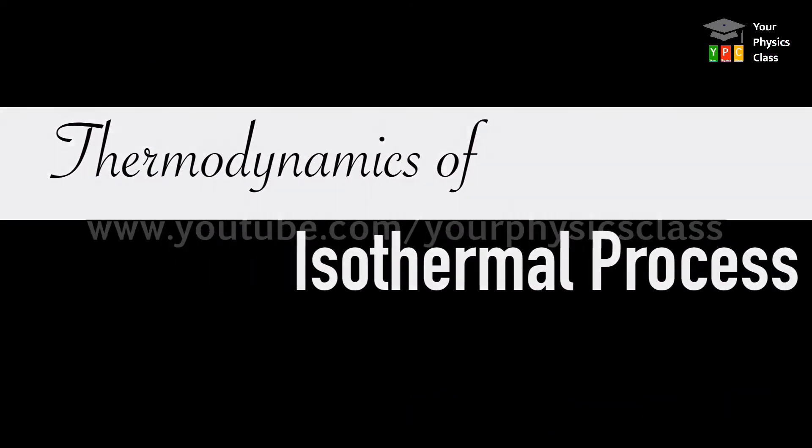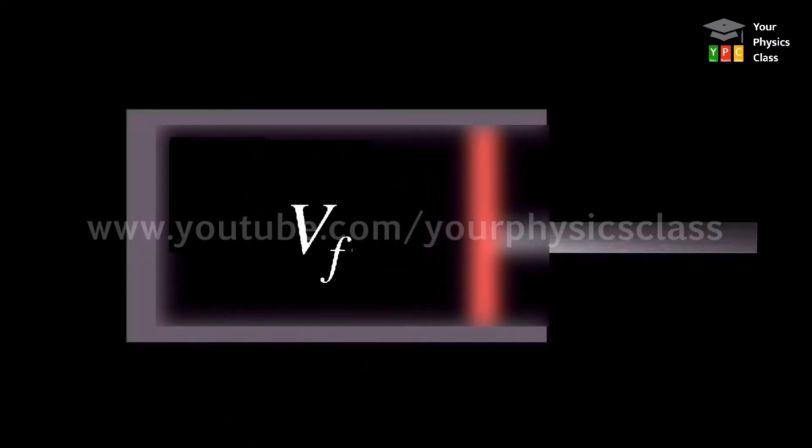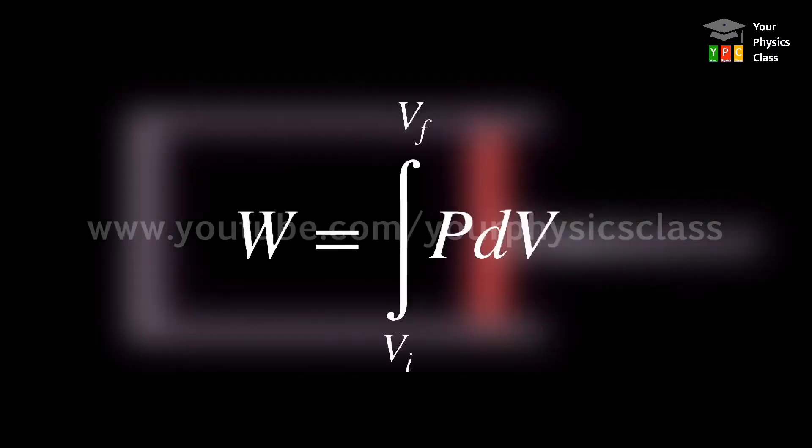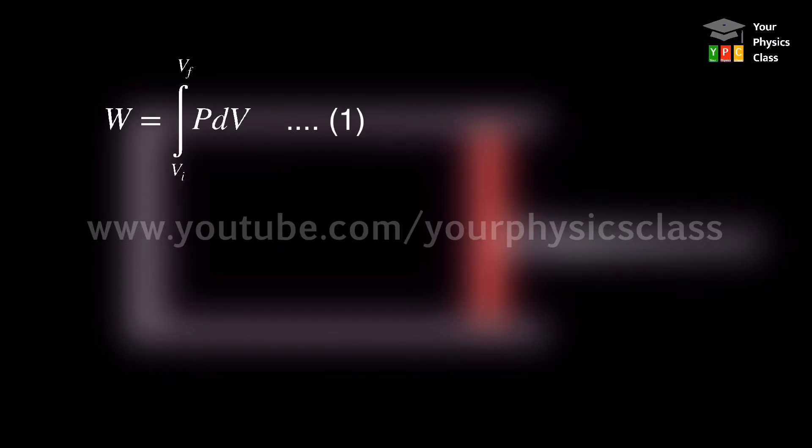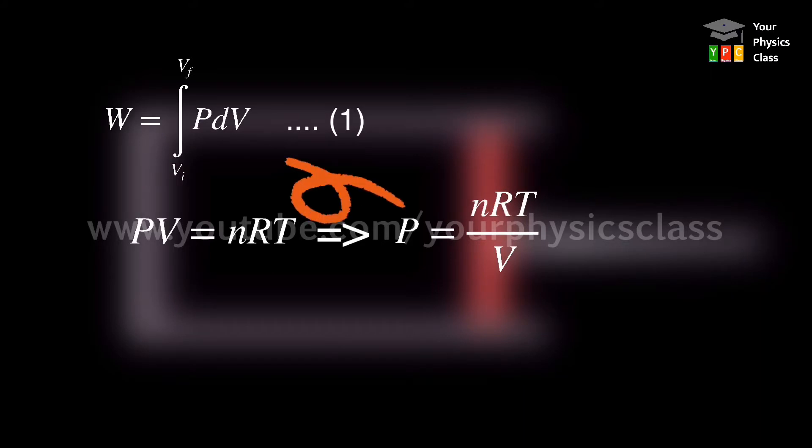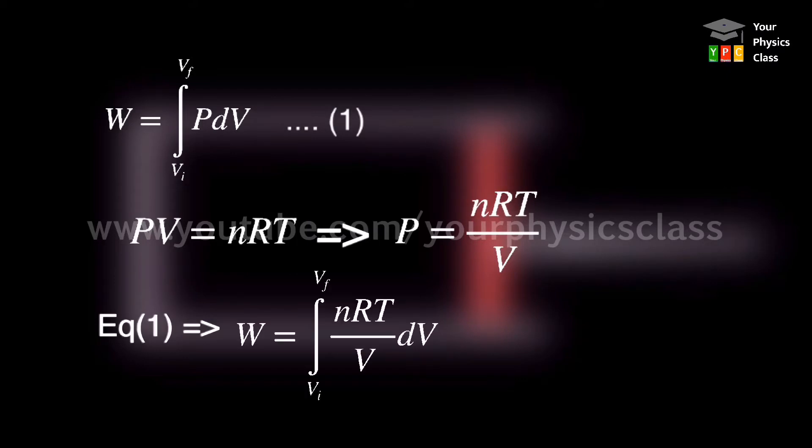Thermodynamics of isothermal process: During isothermal expansion from Vi to Vf, work done to bring the expansion is W equals integration Vi to Vf of P into dV. Let us call this equation as number one. For ideal gas, PV equals nRT in usual notations, which implies that P equals nRT by V. Substituting this value in above equation number one, we get W equals integration between the limit Vi to Vf of nRT by V into dV.